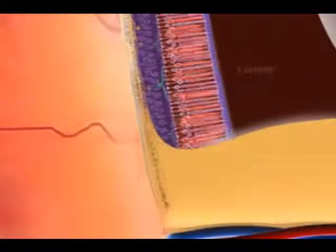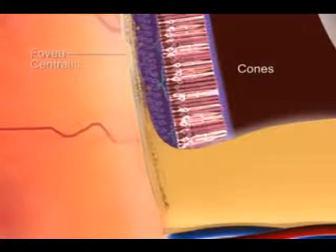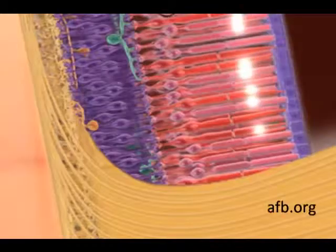Rods are sensitive to light but do not sense color. Cones sense color. The highest concentration of cones is in the fovea centralis.